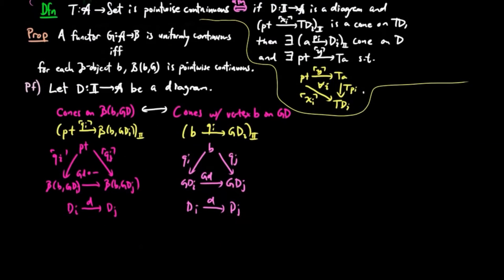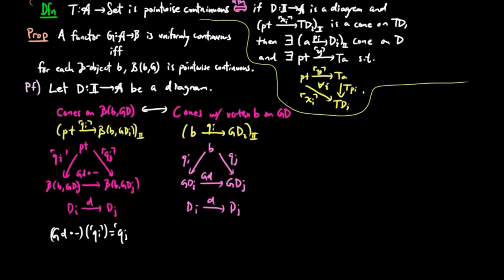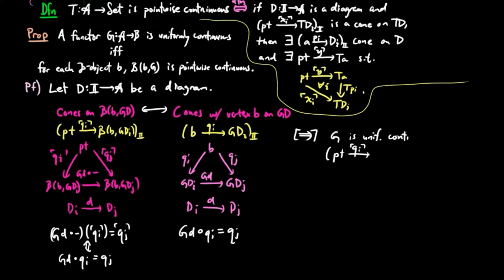Moreover, the cone condition on the left in sets can be seen to be the same as the condition of a cone on the right in the category B. So to prove the forward direction, we assume G is uniformly continuous and let QI be a cone on B,BG,D in sets. By the equivalence we just shown, this is a cone QI on GD in B.